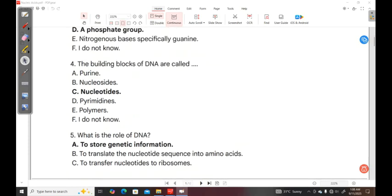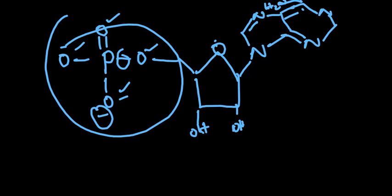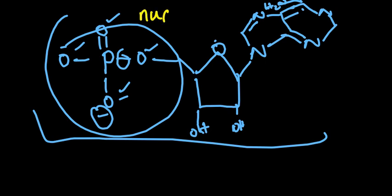Question 4. The building blocks of DNA are called A, purine, B, nucleosides, C, nucleotides, D, pyrimidines, E, polymers, F, I do not know. So the correct answer is nucleotides. So this whole thing that I'm able to see, this whole structure is what we call a nucleotide because this is a basic building block. So a nucleotide will consist of a phosphate group, a sugar, and a nitrogenous base. This is what forms a nucleotide.